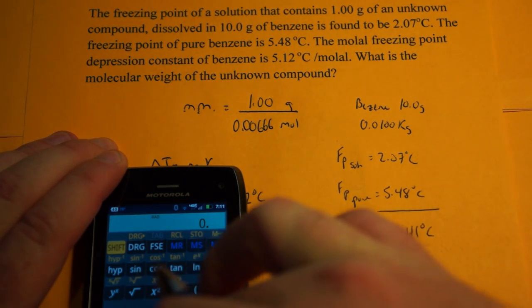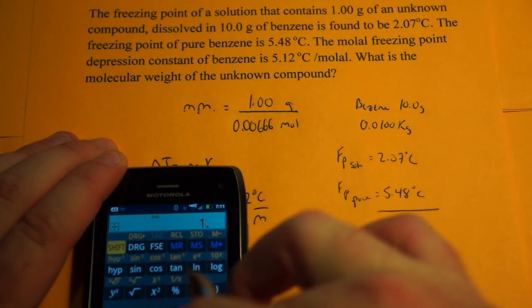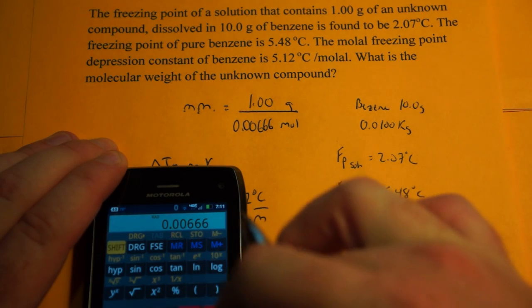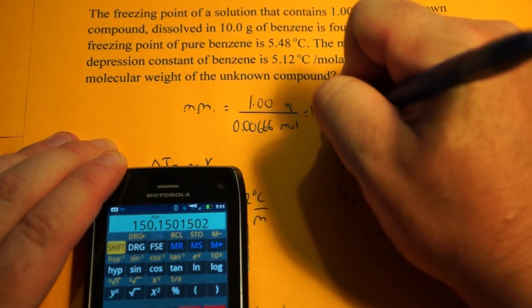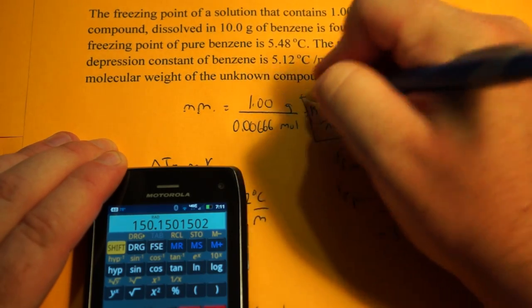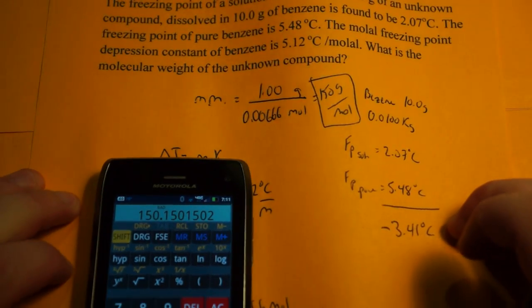So, let's just figure out molar mass, 0.01 divided by 0.00666. And we get 150 grams per mole for our molar mass. And that's how you figure out molar mass from freezing point depression.